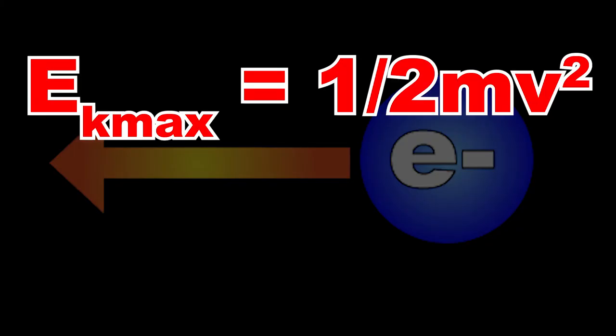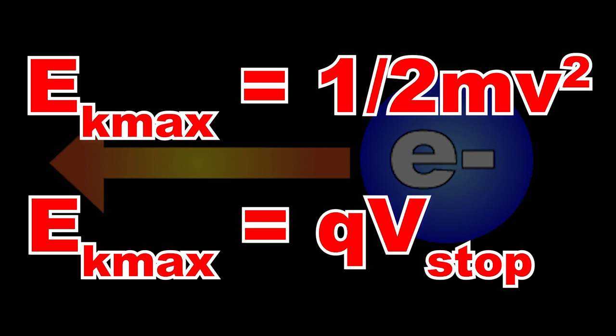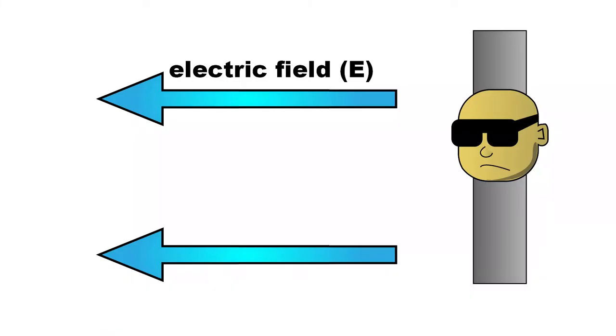This energy can be calculated in the physics 20 way using kinetic energy equals one half m v squared, or using the formula EK max equals q V stop, where q is the charge of the electron and V stop is the stopping voltage, or the voltage needed for an electric field (also present in Einstein's experimental design) to stop the electron.